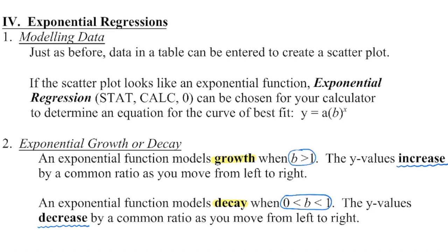Similar to what we did with polynomial regression, we're going to enter the data into our calculator to get that scatter plot. Then we're going to use our technology — in this case a calculator — to determine that curve of best fit. The steps are the same as before, but this time when you go into the stat menu, you're going to arrow over to calculate and then go all the way down to number zero, and that will give you your exponential regression.